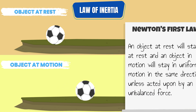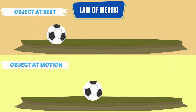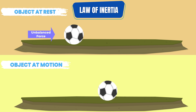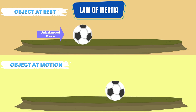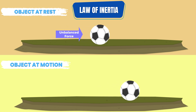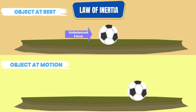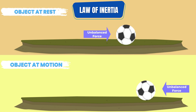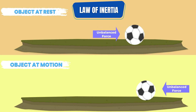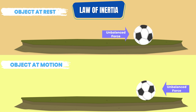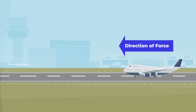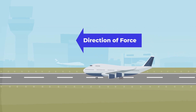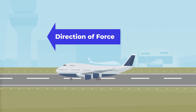To move an object at rest, a force needs to be applied to it. Similarly, to stop an object's motion, an equivalent force needs to be applied in the direction opposite to the motion. So the more force applied to the object at rest, the faster it will move in the force's direction.